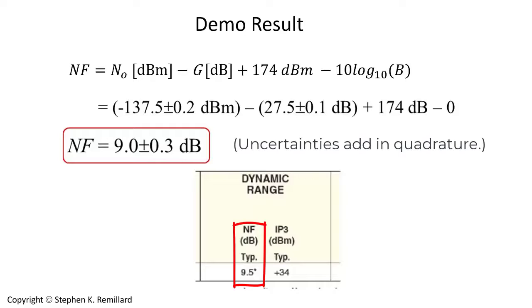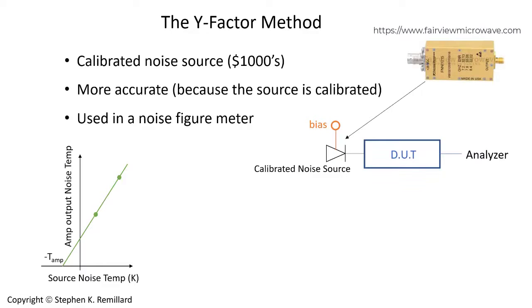If you want to do a measurement on a low noise amplifier where the noise figure may only be one decibel, you can follow this procedure but you have to be meticulous in accounting for every tenth and hundredth of a decibel along the way. My concluding remark is that this is not really a very good way to measure noise figure.